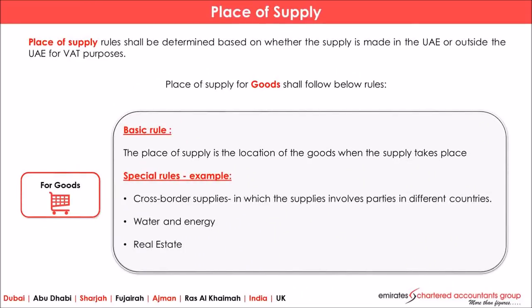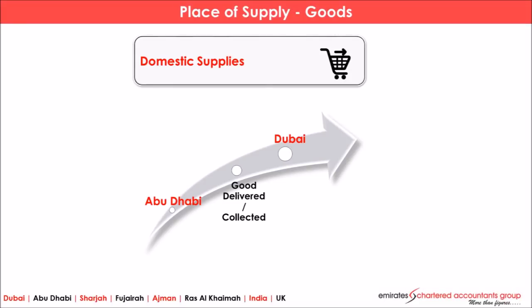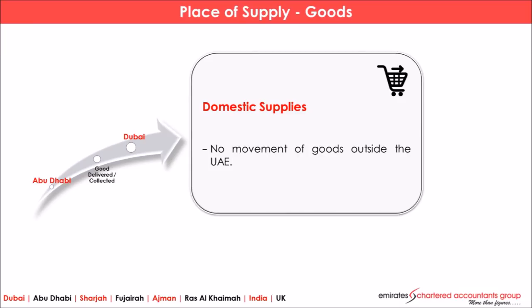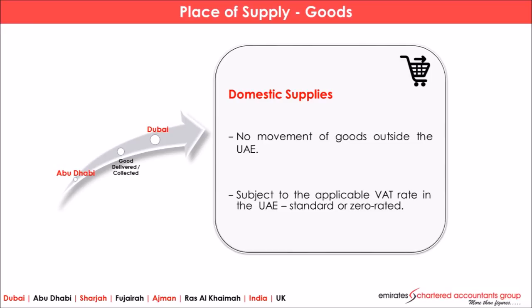There are some special rules — for example, cross-border supplies involving parties in different countries, water and energy, and real estate. In domestic supply, goods are moving from one location to another within the UAE with no movement outside the UAE. Here VAT is applicable at the applicable rate — five percent or zero rate as the case may be. As shown in the picture, goods moving from Abu Dhabi to Dubai are collected within UAE, so tax is applicable.